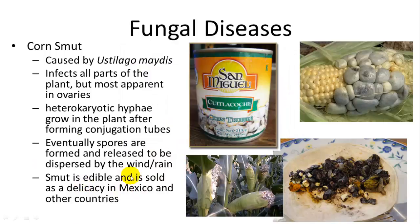Smut is actually edible — you can buy it or sometimes cook it, usually in Mexico and other southern countries where they grow lots of corn. It'd be interesting to see if we can get some and eat it in class.